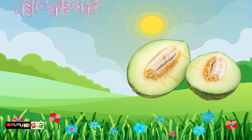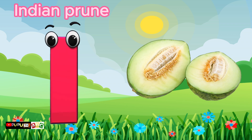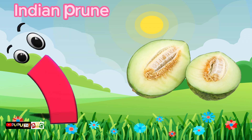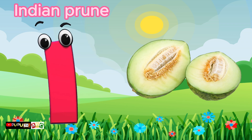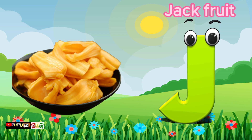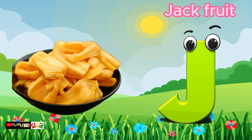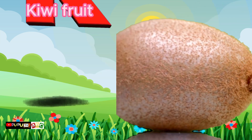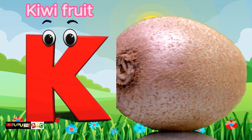I is for Indian Prune. I-I-Indian Prune. J is for Jackfruit. J-J-Jackfruit. K is for Kiwi Fruit.